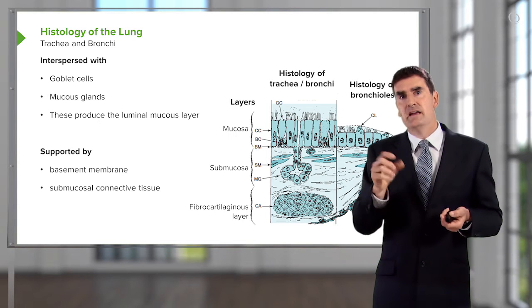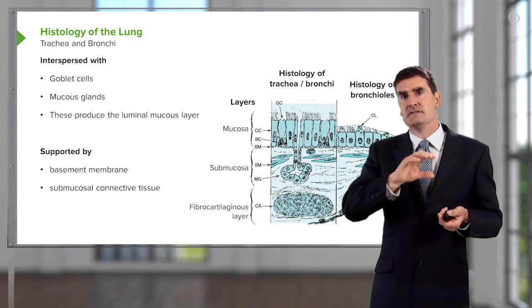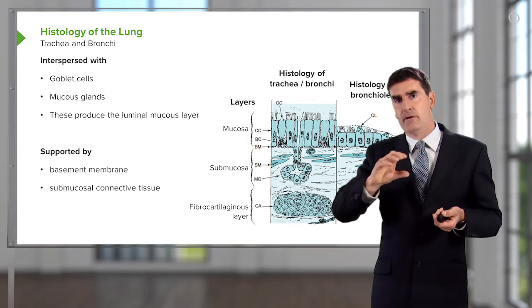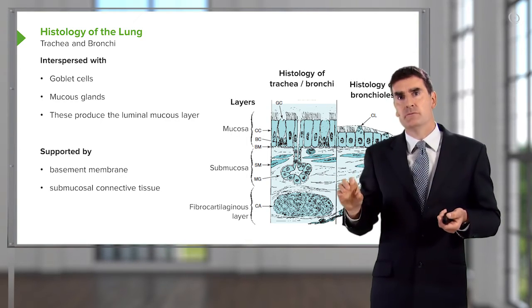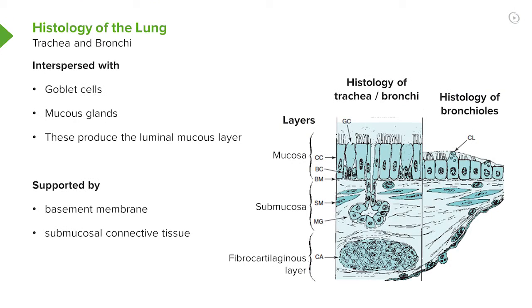As you go down the airway towards the bronchioles, the amount of submucosa thins out and the height of the columnar epithelium becomes smaller, and eventually you lose your cilia as well.